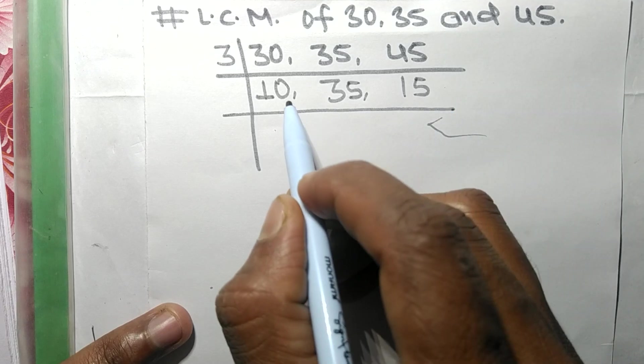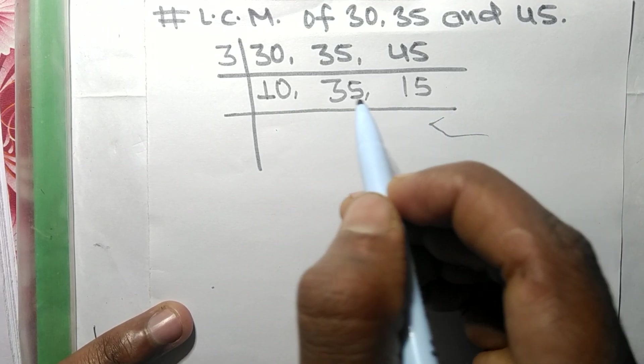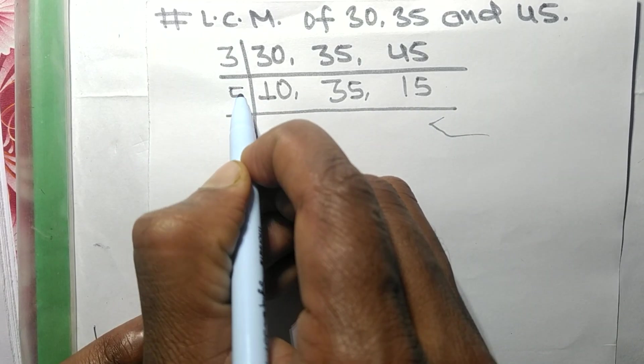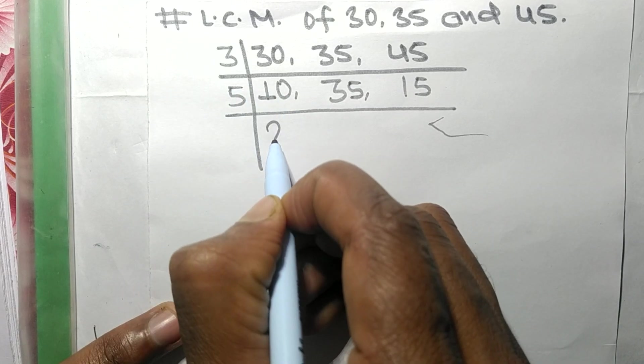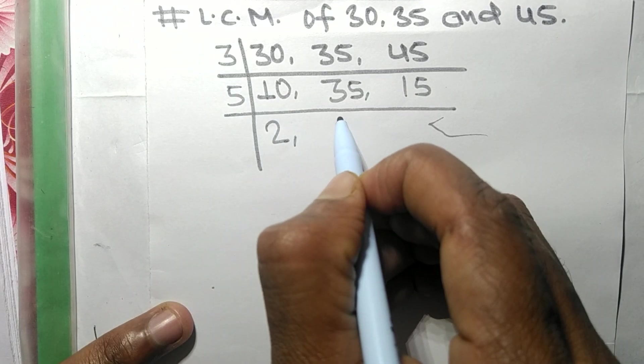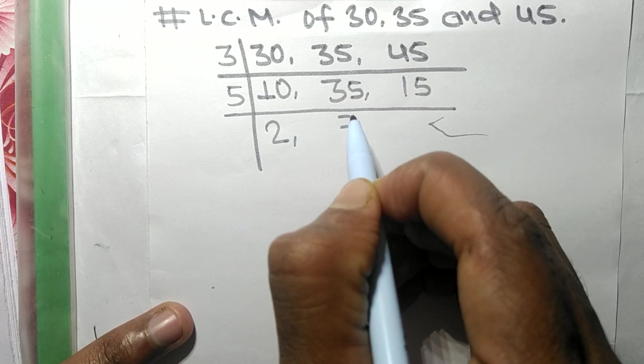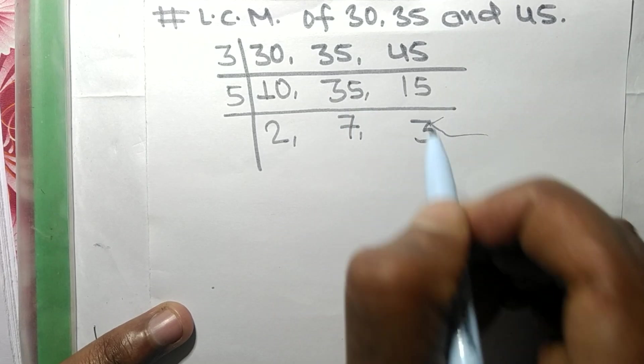Now again, these all numbers are exactly divisible by 5. So 5 times 2 equals 10, 5 times 7 equals 35, and 5 times 3 equals 15.